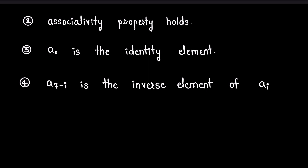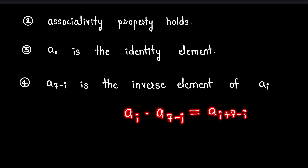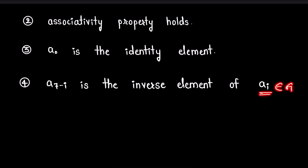For any a-i in G, a-(7 minus i) will be the inverse of a-i. We can check: a-i dot a-(7-i) equals a-(i + 7 - i) equals a-7, and since 7 equals 7, its result will be a-(7-7) equals a-0, which is our identity element. So for any a-i in G, a-(7-i) is its inverse. Therefore all four axioms of a group hold, and the given set G with the defined binary operation is a group.